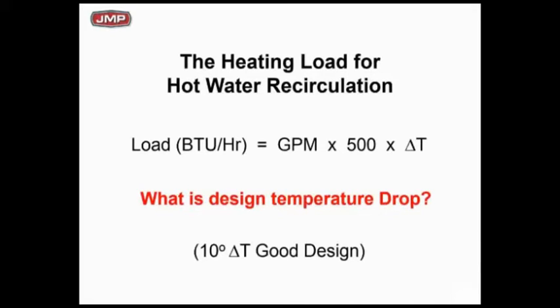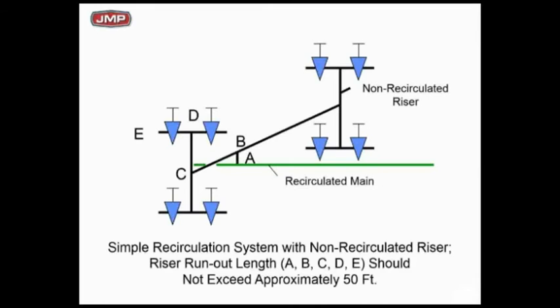First, let's talk about the heat load. We want the heat loss in that supply piece of pipe. It's the familiar formula: Q = GPM × 500 × delta T. The first question is: what is a good design delta T? I'm going to use 10 degrees. 20 would probably work, 5 is okay, but 10 degrees is very reasonable. A lot of designers use 10, but there's nothing cast in stone about that.